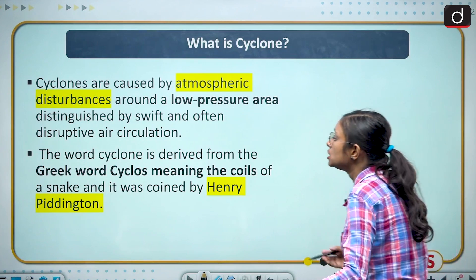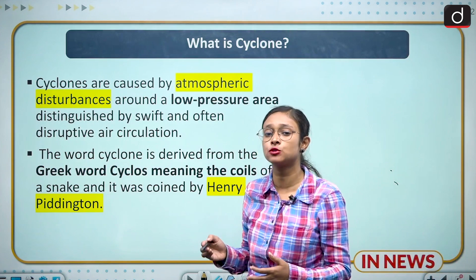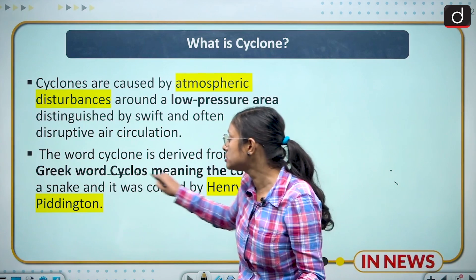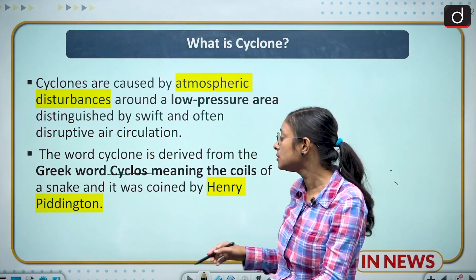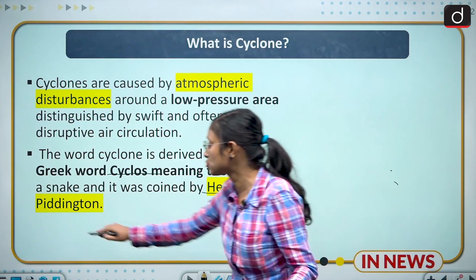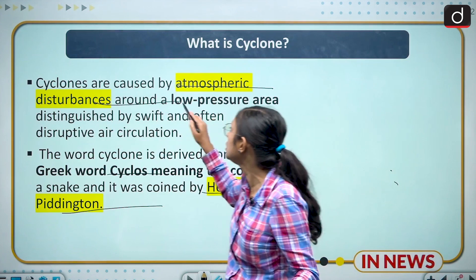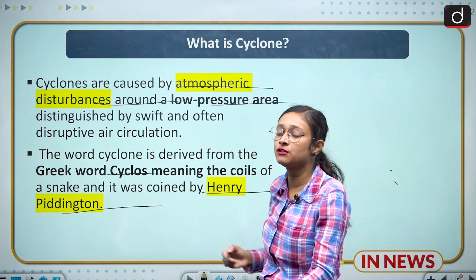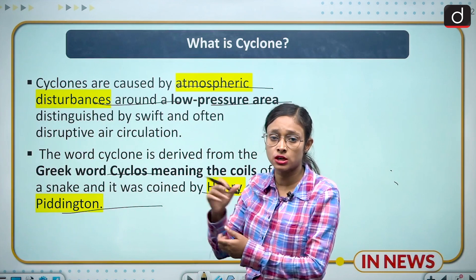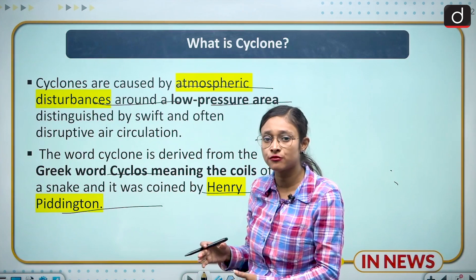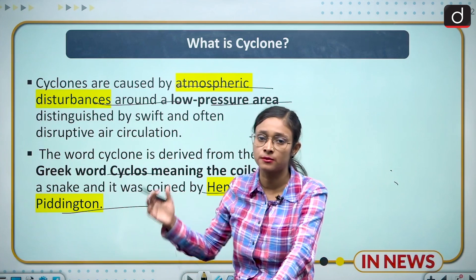The next slide is about what a cyclone is. The word has been coined from the Greek word 'cyclos,' taken from the coil of a snake, and Henry Paddington coined this term. Cyclones are atmospheric disturbances around a low pressure area which create disruptive air circulation. In the northern hemisphere they create anti-clockwise circulation, and in the southern hemisphere they create clockwise circulation.